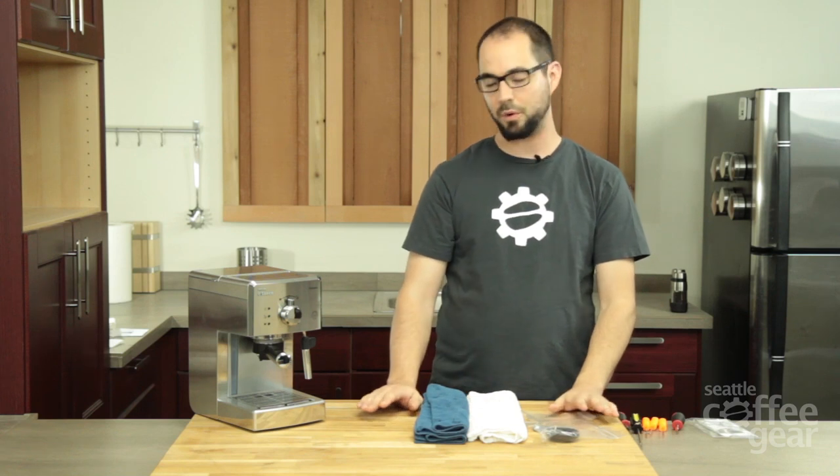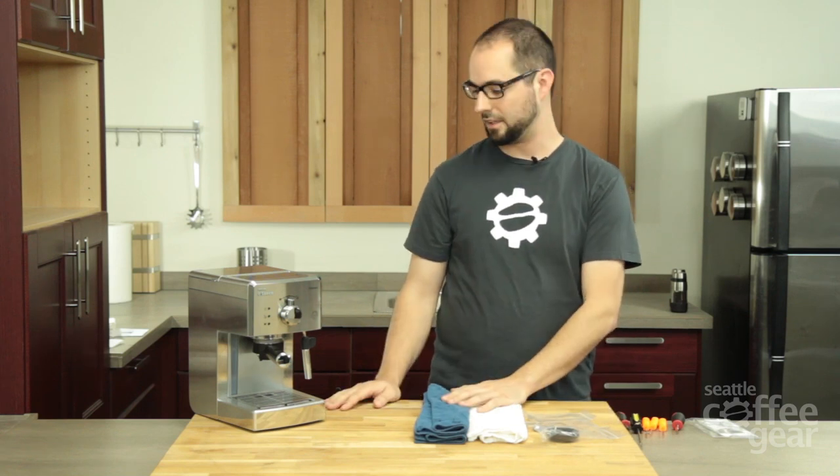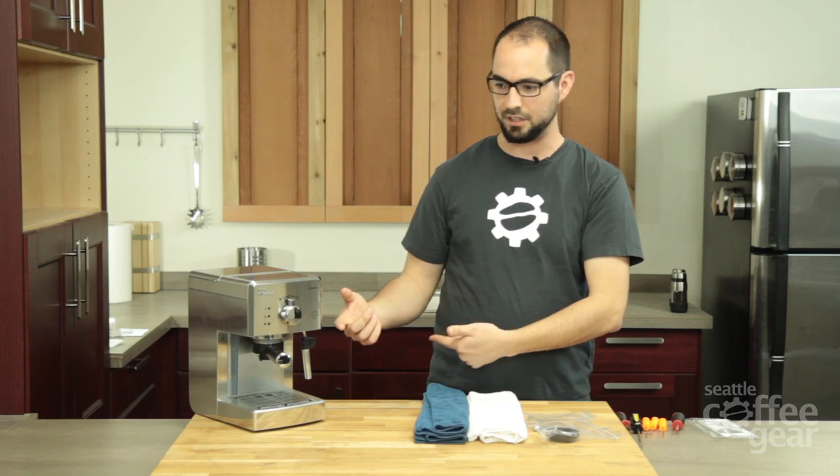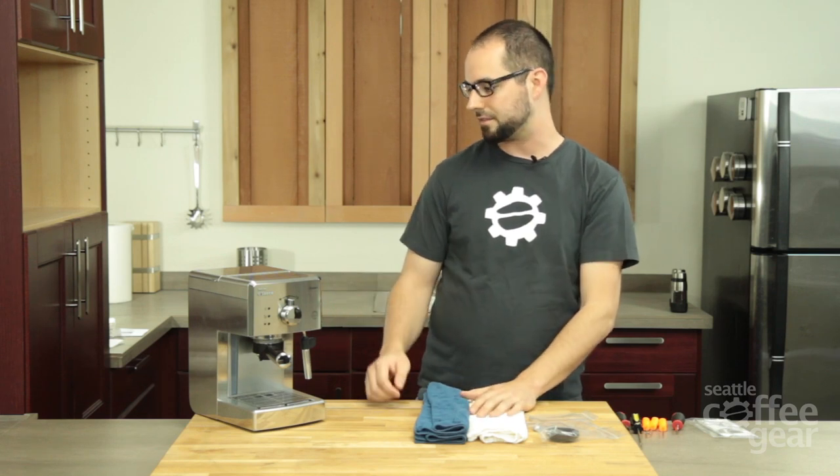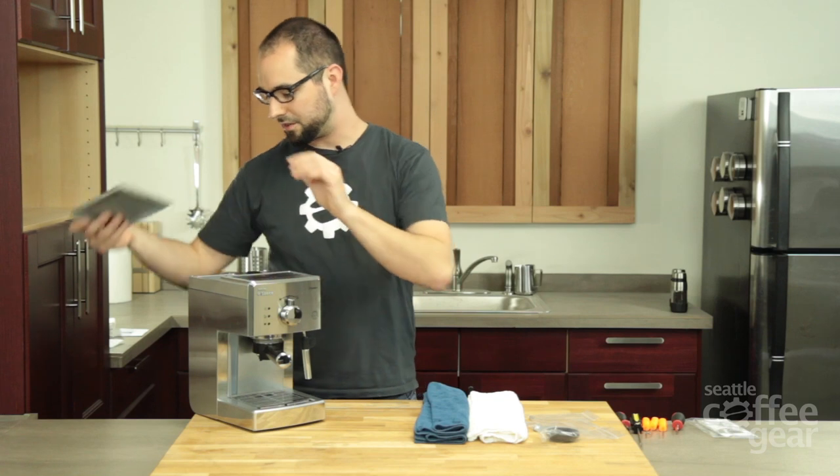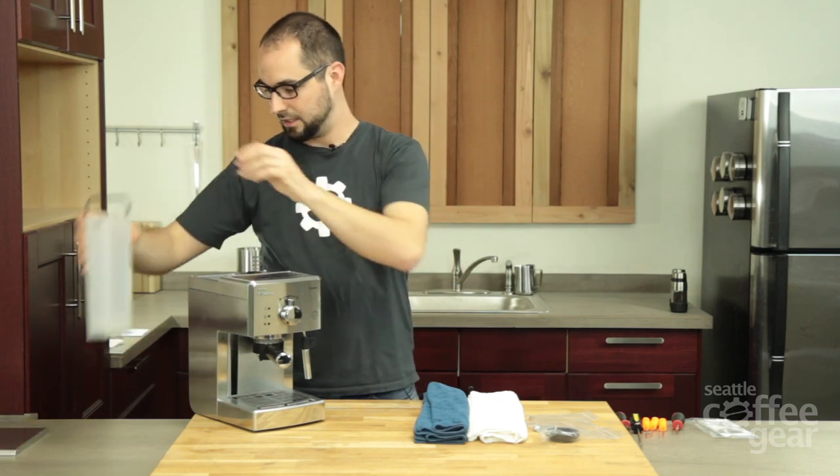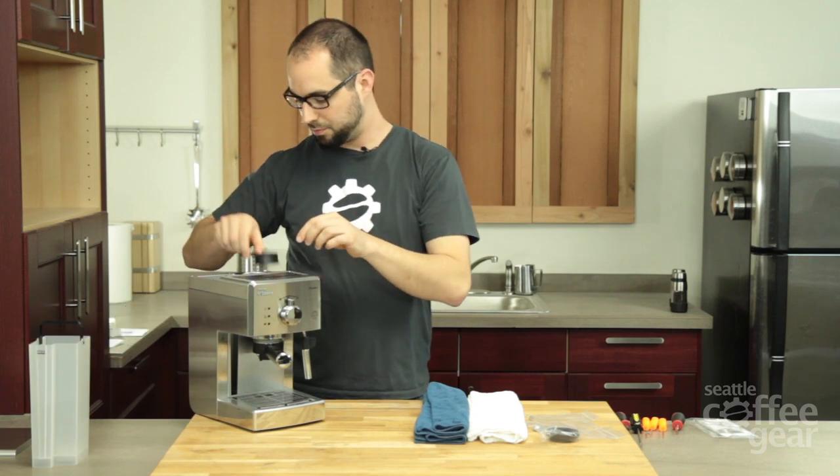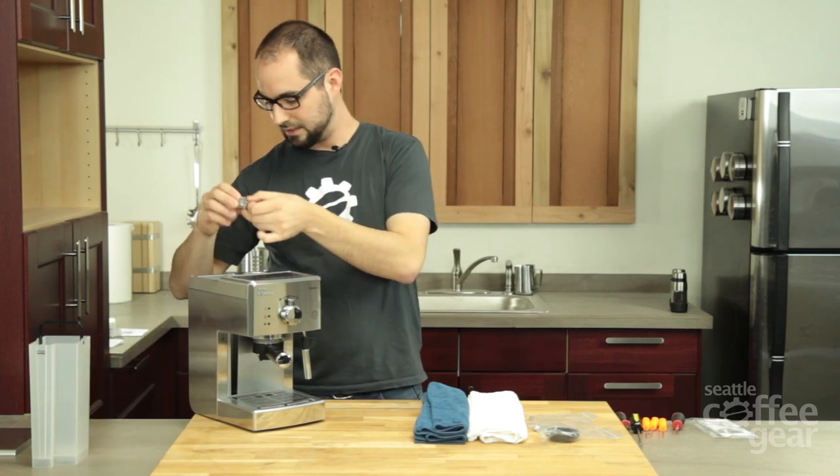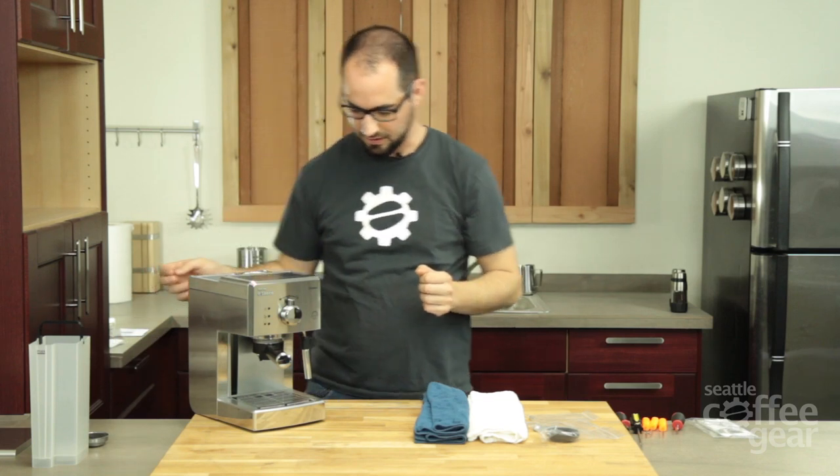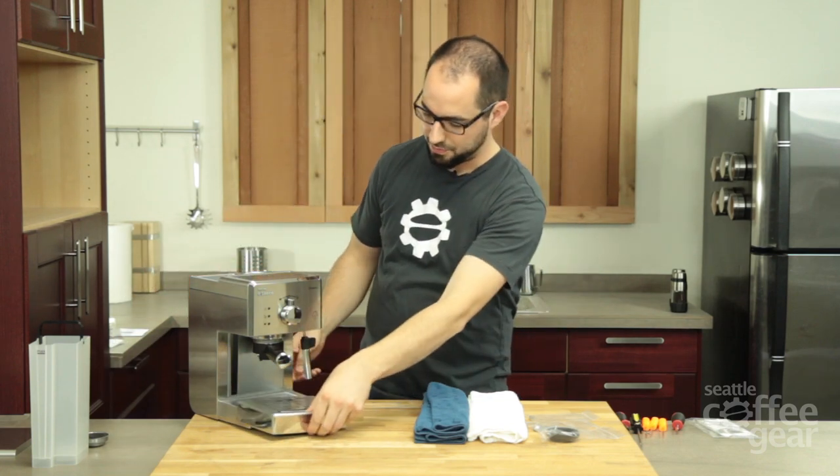First thing we're going to want to do is remove all the accessories so we can flip the machine over because that makes it really easy when installing a brew head gasket. So we're going to take off our water tank lid, our water tank. We have a nice pre-ground scoop in here with a basket and another gasket for that basket.